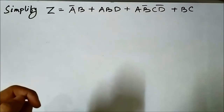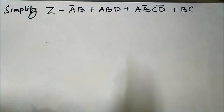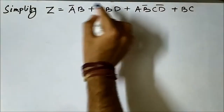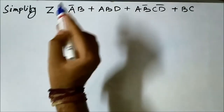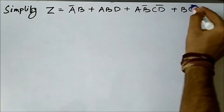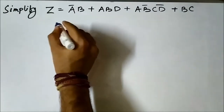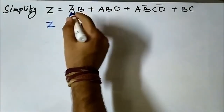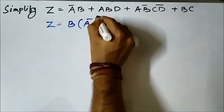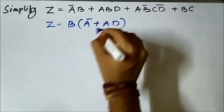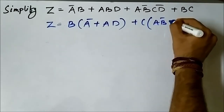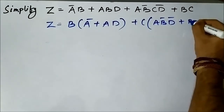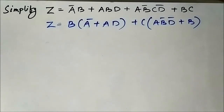Looking at the first two terms, b is the common variable — b is present in both. In the remaining two terms, c is the common variable. So let us take b common from the first two terms and c common from the last two terms. It becomes: b·(ā + a·d) + c·(a·b̄·d̄ + b).